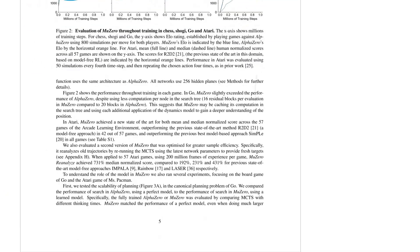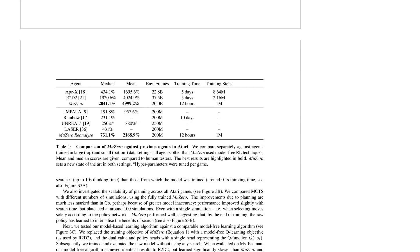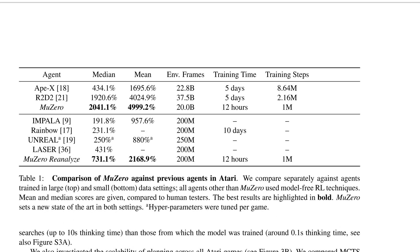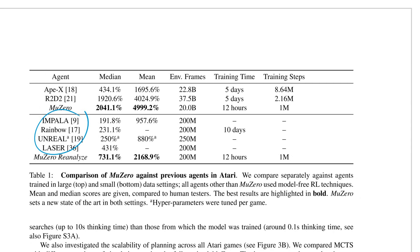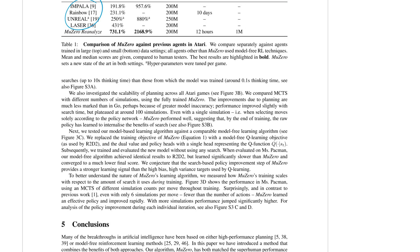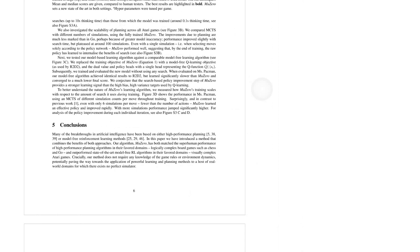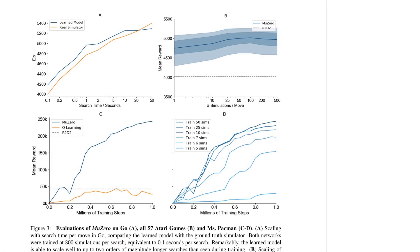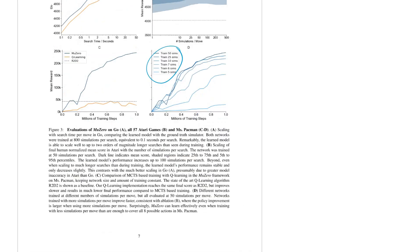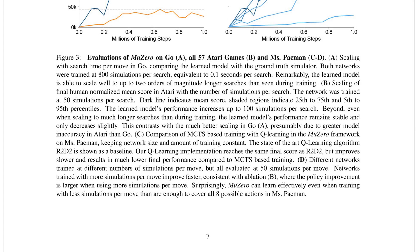This brings RL to a new level with hidden-state learning. They compare against multiple baselines. It's a cool, relatively short paper — I'd invite you to read it, especially the additional experiments where they ablate whether the learned model is as good as a real simulator, how much time it takes (actually less time at higher Elo ratings), and how many simulations are needed. Check it out!